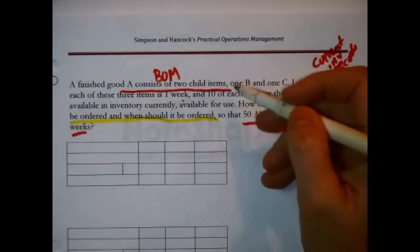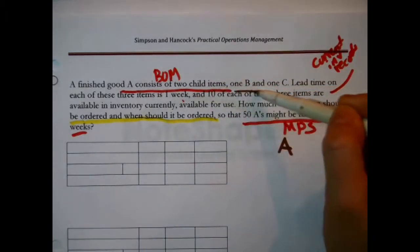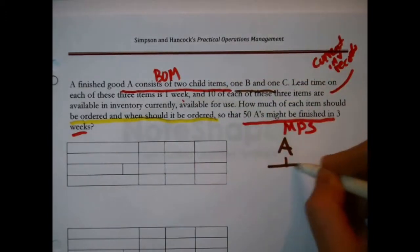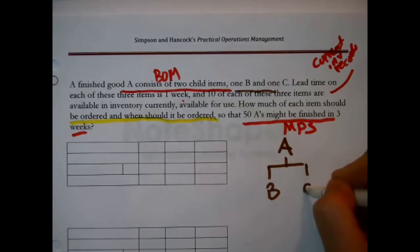A finished good A consists of two child items, one B and one C. There's something called an A that's made out of a B and a C.